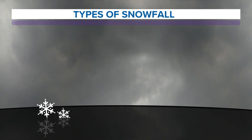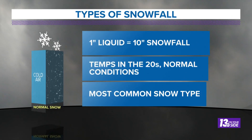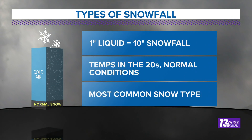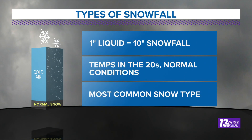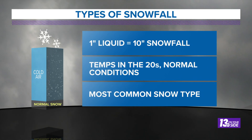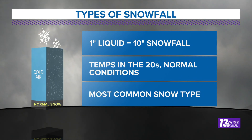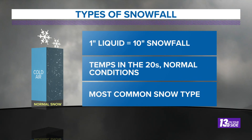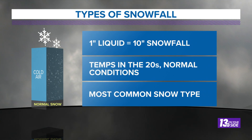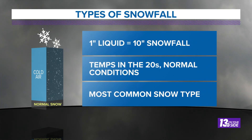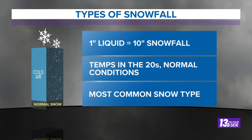Well, let's look at how they form across the region. First, your average snowfall — nothing too remarkable. About one inch of liquid, which would be rain, equals about 10 inches of snowfall. This is your pretty normal snowfall: temperatures in the 20s, normal conditions, the most common type.